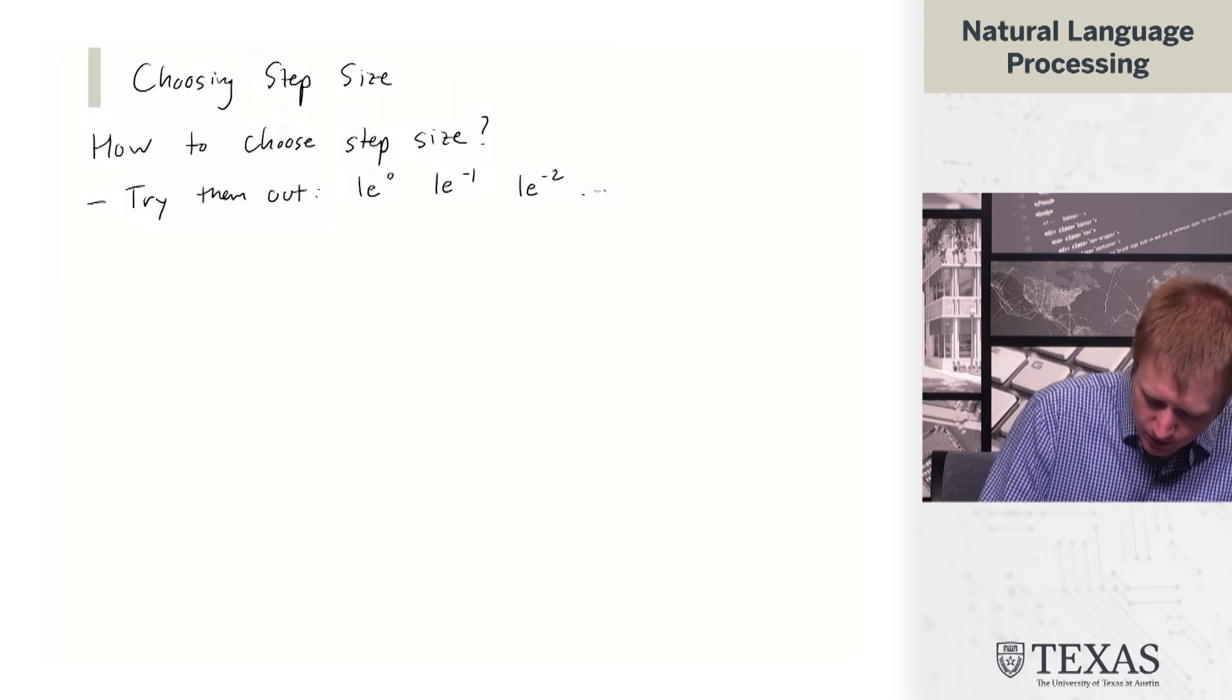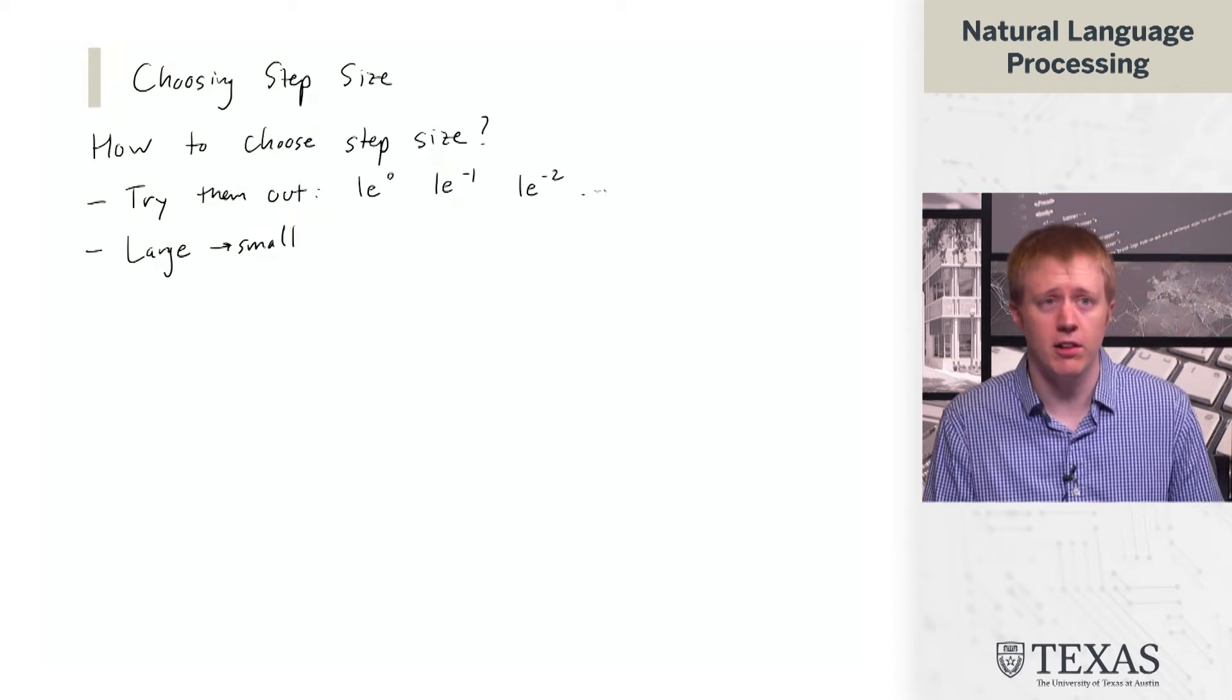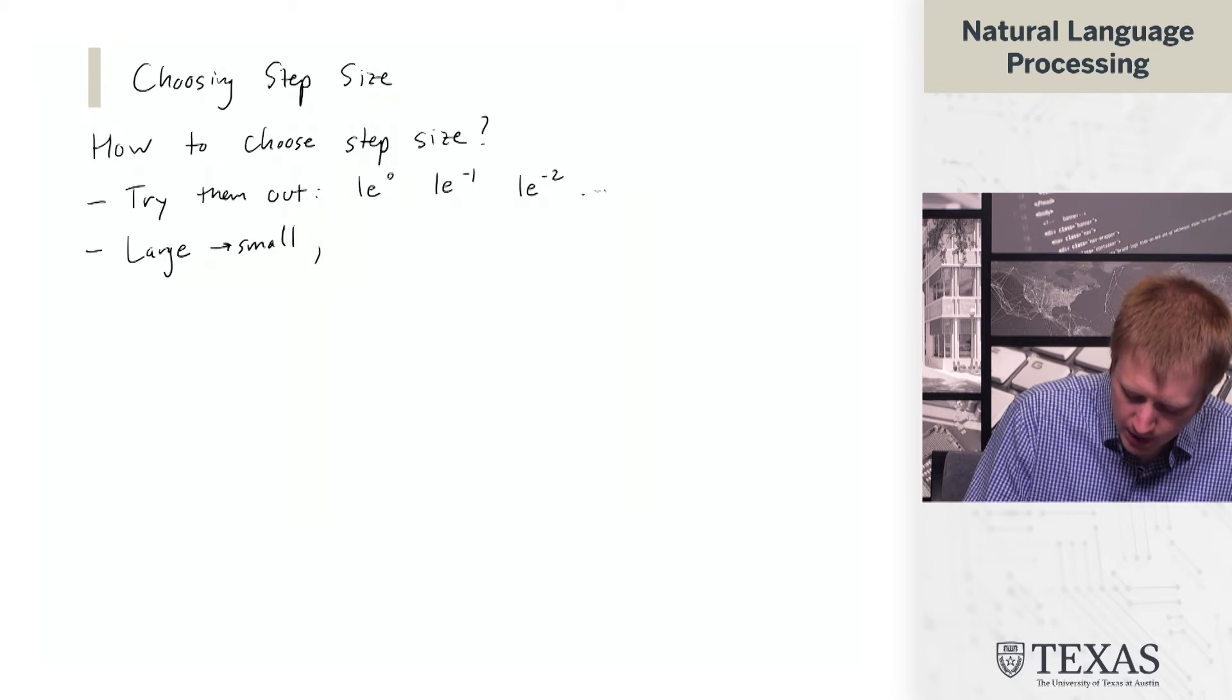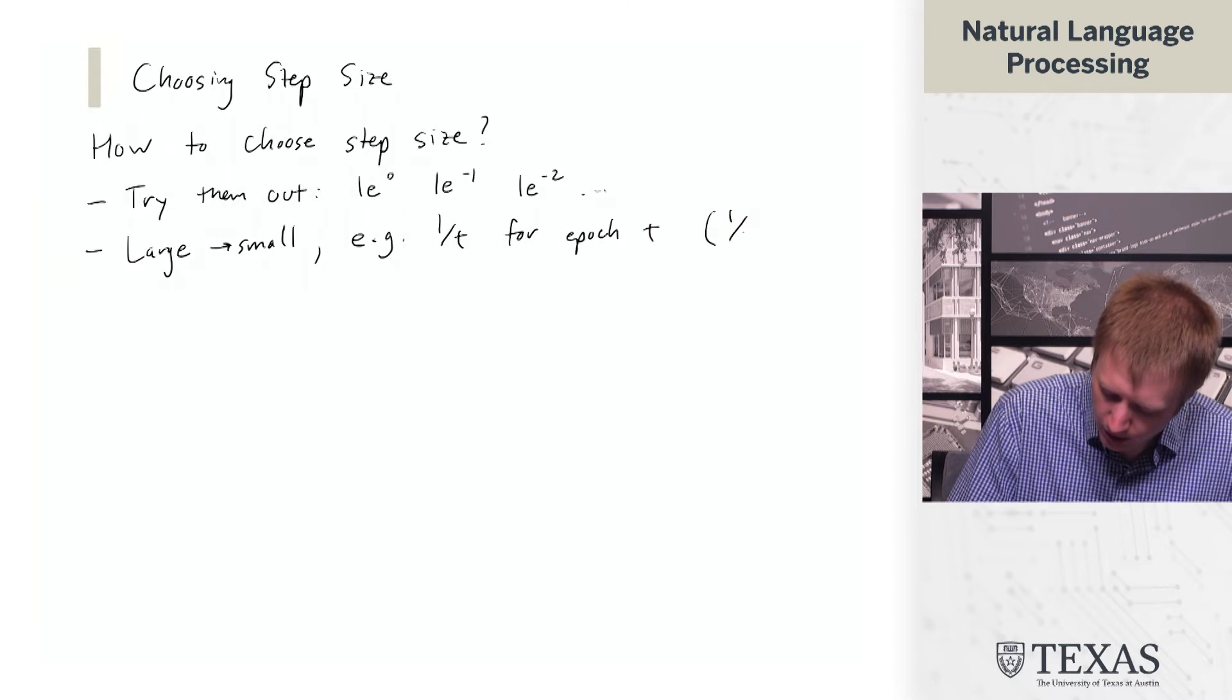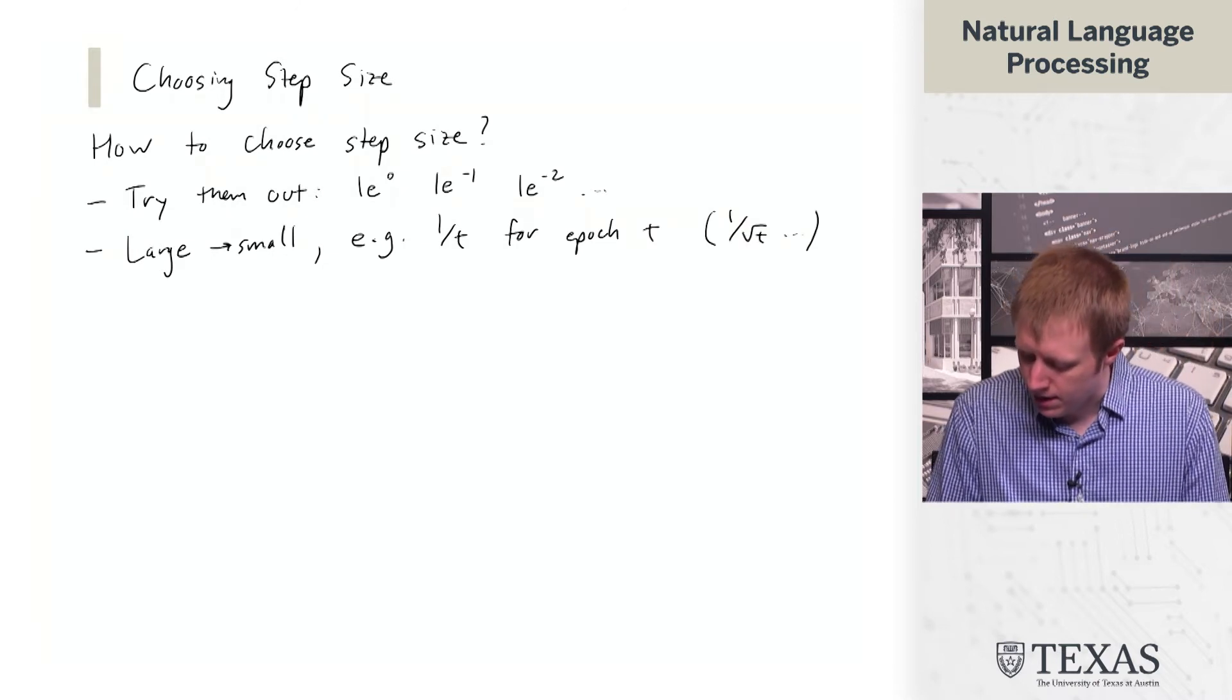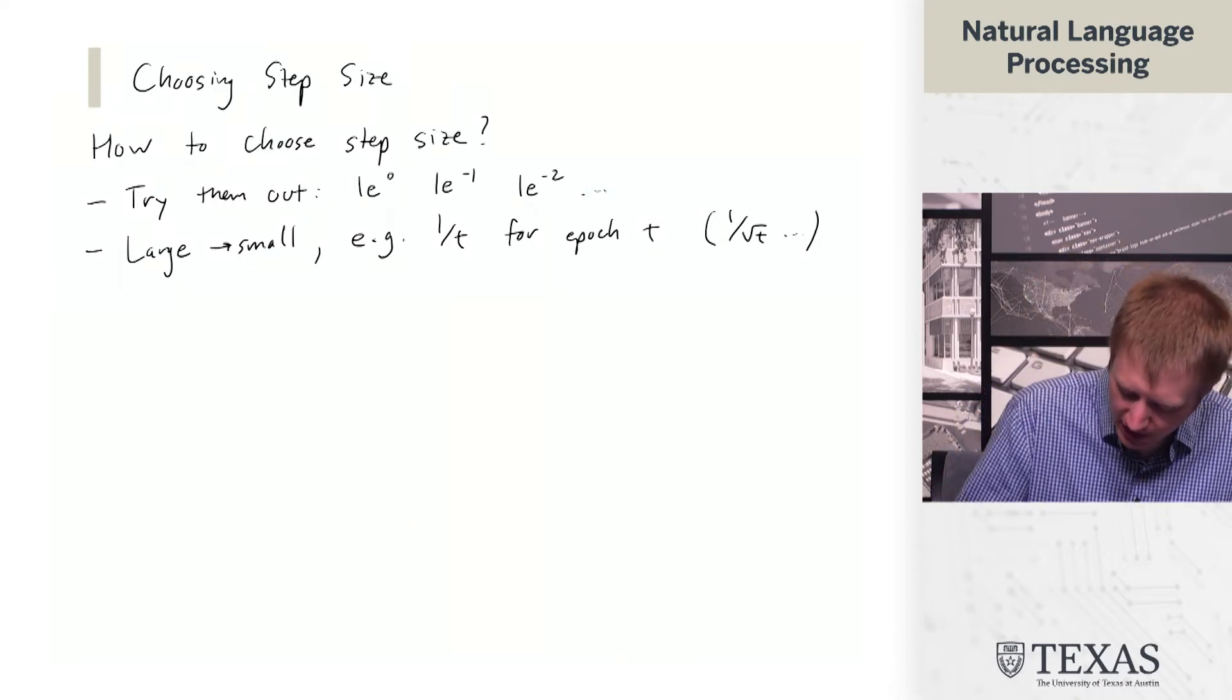Another thing that's pretty common is to start with a larger step size and go to a smaller step size. Something like 1 over t for epoch t, or 1 over the square root of t. That's a fixed schedule.